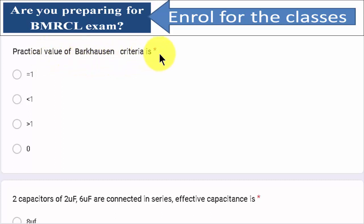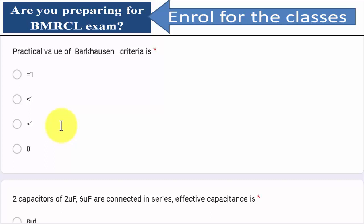Practical value of the Barkhausen criterion: the ideal value is 1, but the practical value — A·beta — should be 1.02, or slightly greater than 1. So, A·beta greater than 1. A·beta equals 1 is for the ideal scenario.